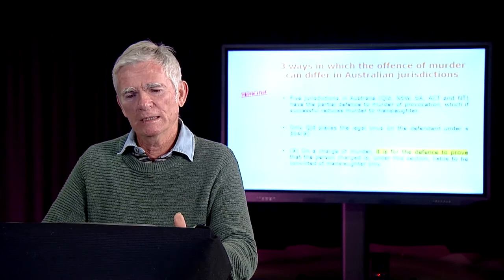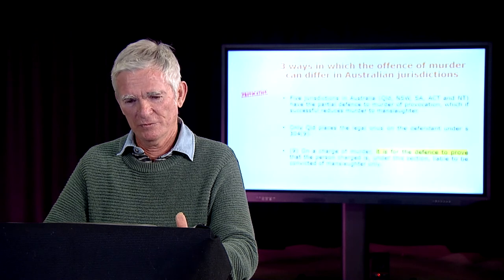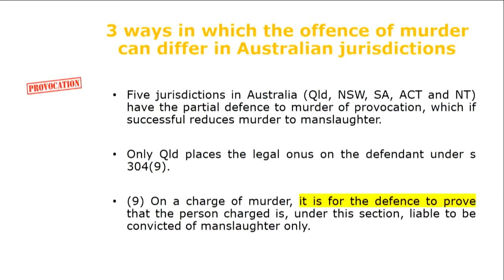Another way in which offences differ in terms of murder is the availability of provocation. Five jurisdictions in Australia — Queensland, New South Wales, the ACT, the NT and South Australia — have the partial defence to murder of provocation, which if successful reduces murder to manslaughter. Even within these defences, they differ. In Queensland, the legal onus is on the defendant if you're running a partial defence to murder of provocation. You find that in section 304, subsection 9 — it is for the defence to prove.